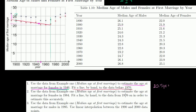Part two: use the data from example one to estimate the age at marriage for females in 1984. Fit a line by hand to the data from 1970 onward. So I draw a line that gets close to describing all of these points from 1970 on — not all sit exactly on it but they're all pretty close. If we assume this is a good linear model and read off 1984, it looks to be about 23.2 years.